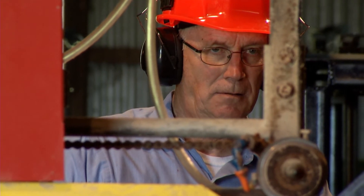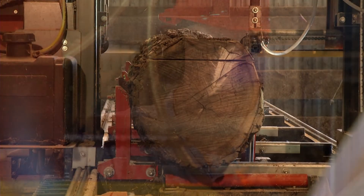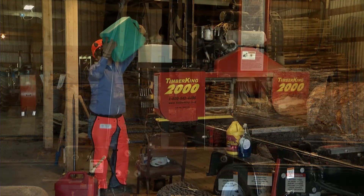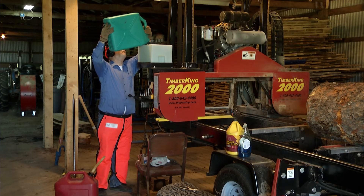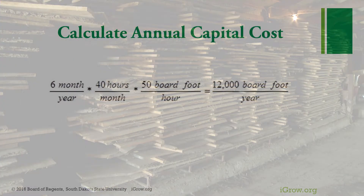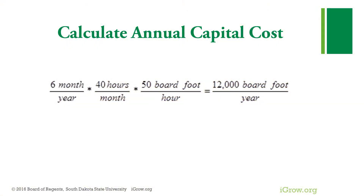From my experience I know that I operate the mill on average about 40 hours per month, six months per year. Working by myself I average about 50 board feet per hour — a long way from advertised, but realistic because I cut by myself and yes, I'm old and slow. This includes all the work from maintenance on the mill to milling to stickering. Annually this means six months per year, 40 hours per month, 50 board feet per hour — that translates to 12,000 board feet per year.